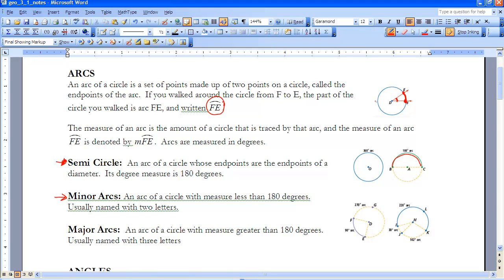And then a major arc would have a measure greater than 180 degrees. Now we need to name a major arc a little bit differently because if we just call it FE, but we were referring to the other direction, we wouldn't know which way to go.